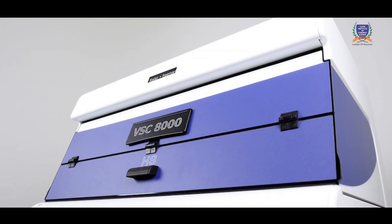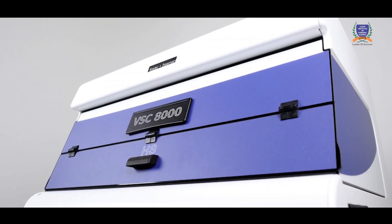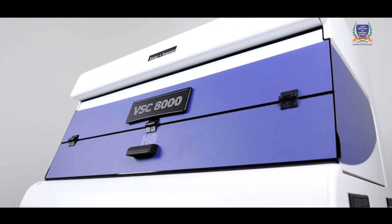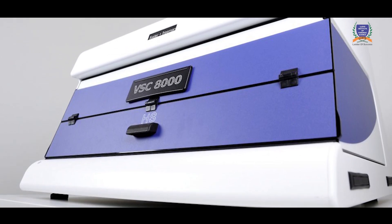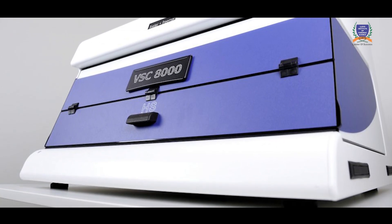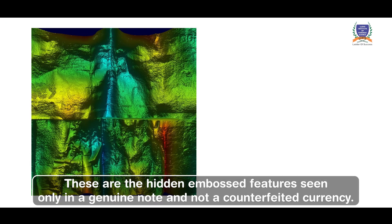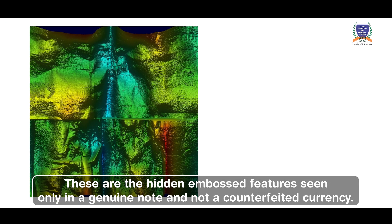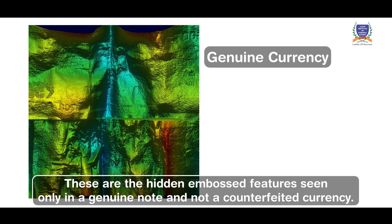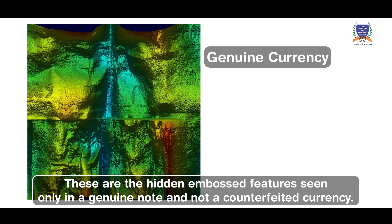One of the most important features, visible under the 3D imaging mode of the Video Spectral Comparator, is what you can see in the image — hidden embossed features that are present only in a genuine note and not in a counterfeit currency. It is very important for all of us to know what is genuine and what is not.